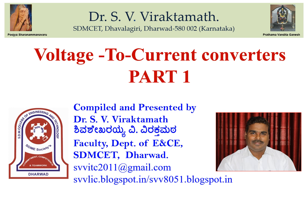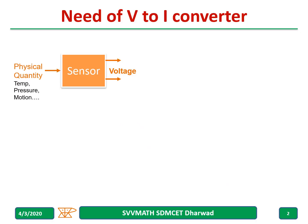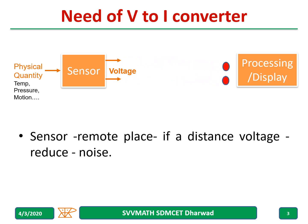Welcome to my channel. In this video we are going to discuss about voltage to current converters, part one. A physical quantity like temperature, pressure, or motion may have to be sensed, and the sensor will give a voltage based on the physical quantity. This voltage will then be processed or displayed.